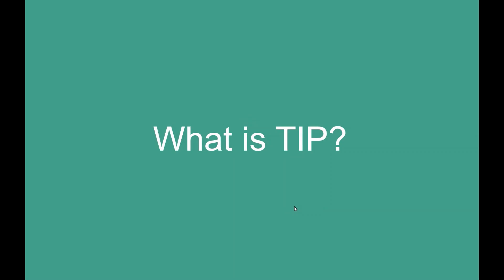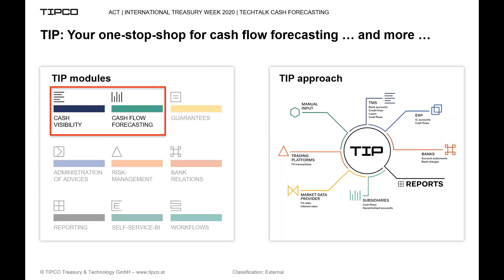In case you've never heard of our treasury information platform TIPCO before, let's take a very quick look at what it is and what it does. TIPCO is a web-based solution made up of various modules, among them cash visibility and cash flow forecasting. TIPCO also supports you in other areas like group-wide bank account management, guarantee management, as well as FX risk management by offering smart digital workflows to support all of these core treasury processes. Our treasury reporting offering also permits you to create fast and flexible reports at the click of a button.